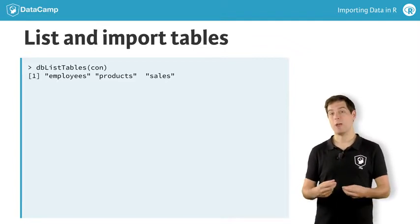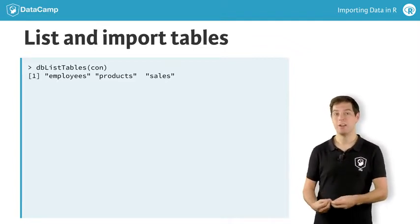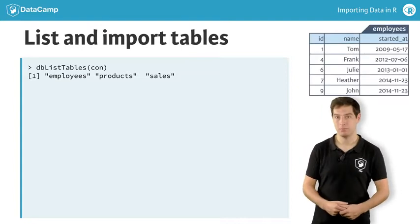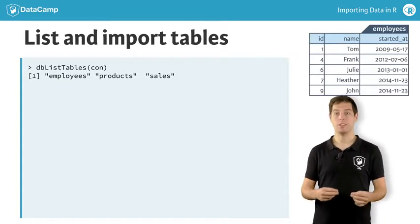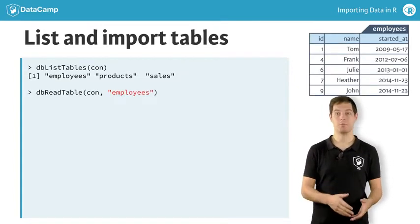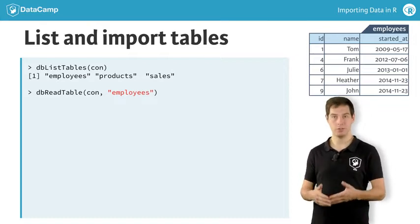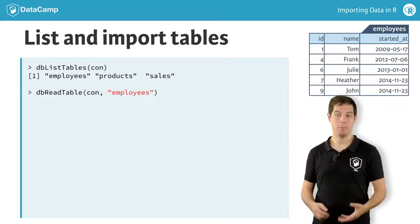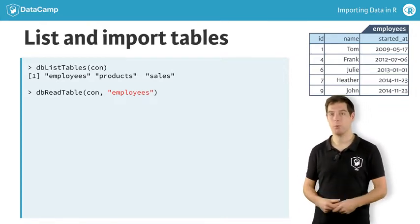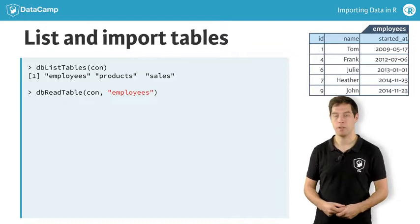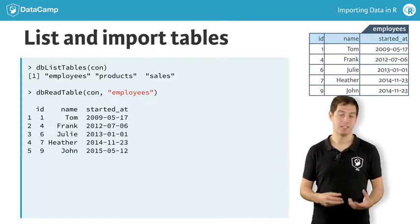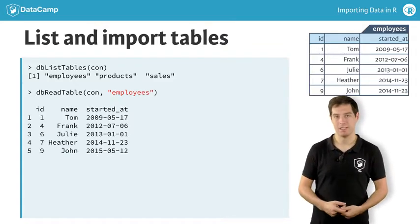Next, you can choose to actually read the data from one of these tables — for example, from the employees table. You use the dbReadTable function for this. Again, you specify the connection to use, but this time you also specify which table data you want to import. The result is a dataframe with exactly the same contents as in the original database table.